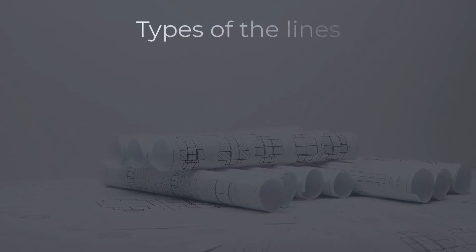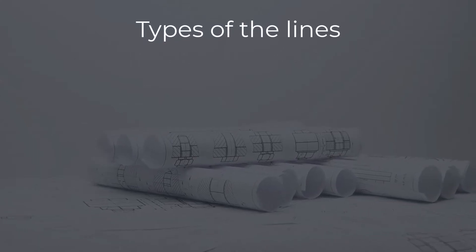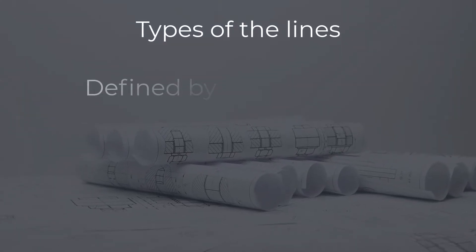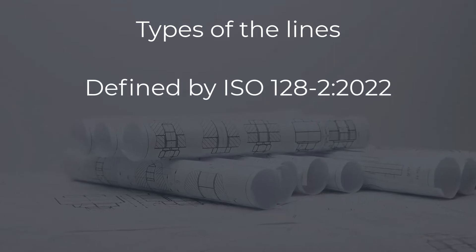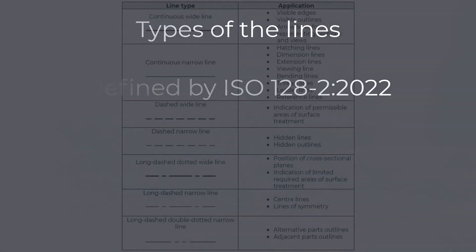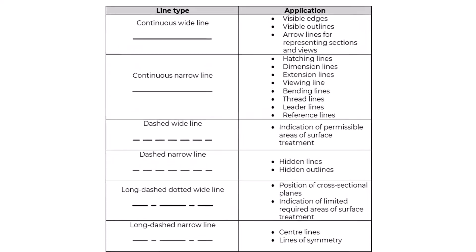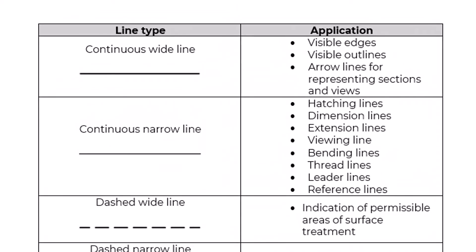Types of Lines. Types of lines on the engineering drawing are defined by ISO 128-2:2022. The line types and their regular uses are: Continuous wide line is used for visible edges, visible outlines, and arrow lines for representing sections and views. Continuous narrow line is used for hatching lines, dimension lines, extension lines, viewing lines, bending lines, thread lines, leader lines, and reference lines.